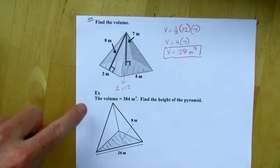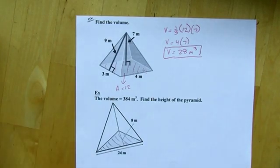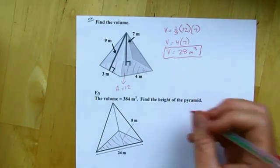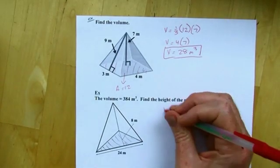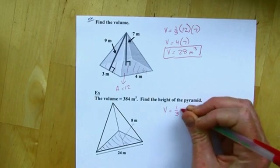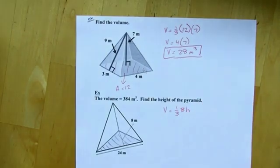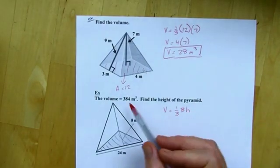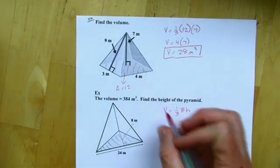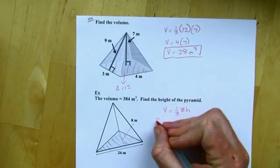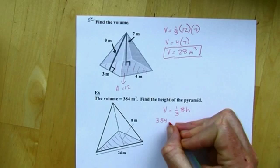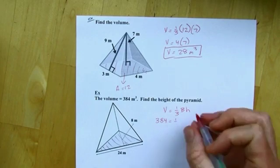All right. So, this time, they tell us the volume. So, I'm going to find the height from that. I'm still going to start with the same formula because I know I'm dealing with the volume of a pyramid. The difference here is, I know the volume, so I'm going to put the 384 in over here.